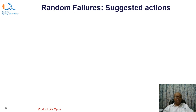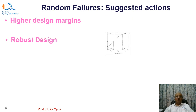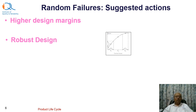Let us look at some suggested actions to prevent the impact of random failures. One technique that designers use is to increase the design margins. If you increase the difference between the strength curve and the load curve — if they are quite apart — then even during higher loads, the strength is still sufficient to prevent such failures. Another technique that came from Dr. Taguchi is robust design, which deals with making the product less sensitive to noise factors or other factors not under the control of the designer.